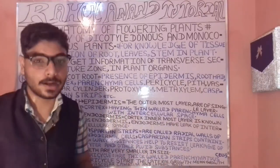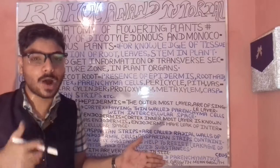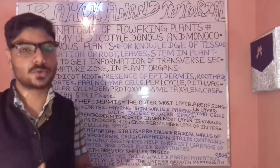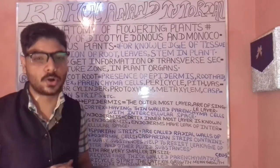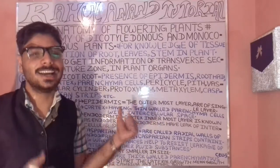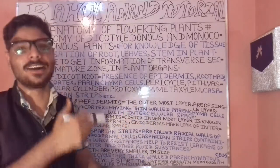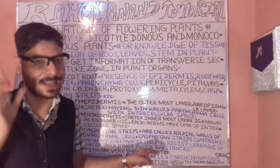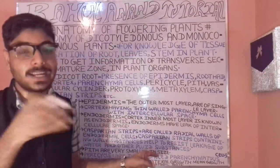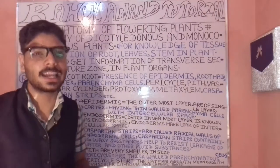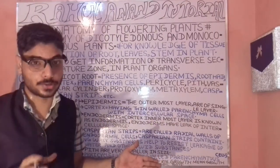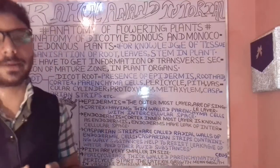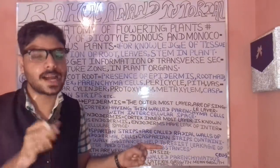After that we are having the pith. The pith is quite small in size when compared to the monocot root. Here we are studying the dicot root, so the pith is quite smaller in size compared to the monocot root.